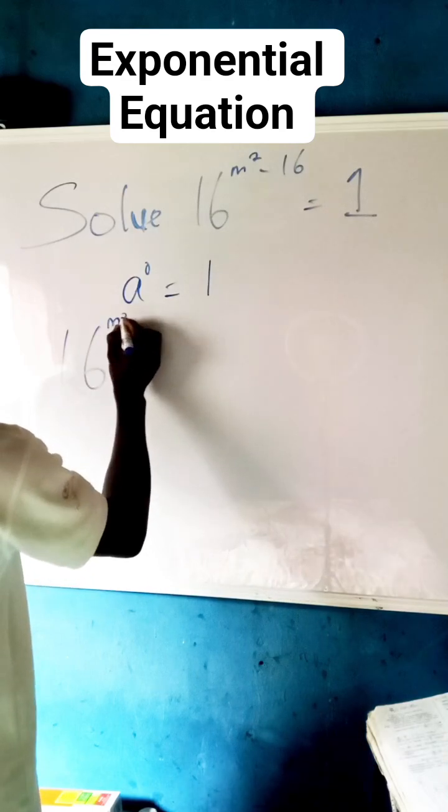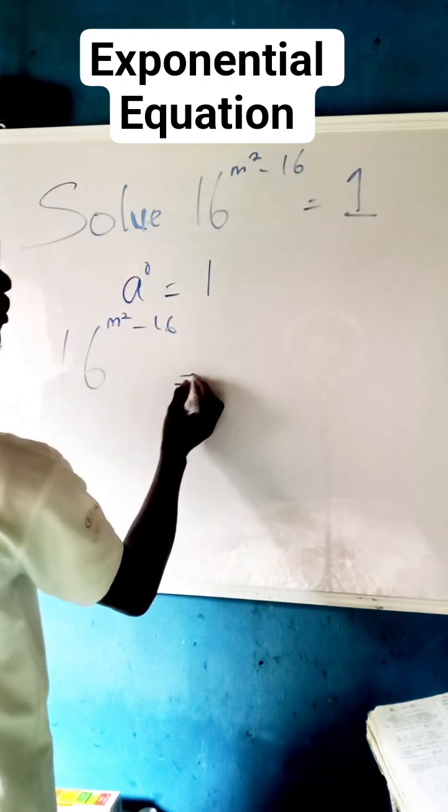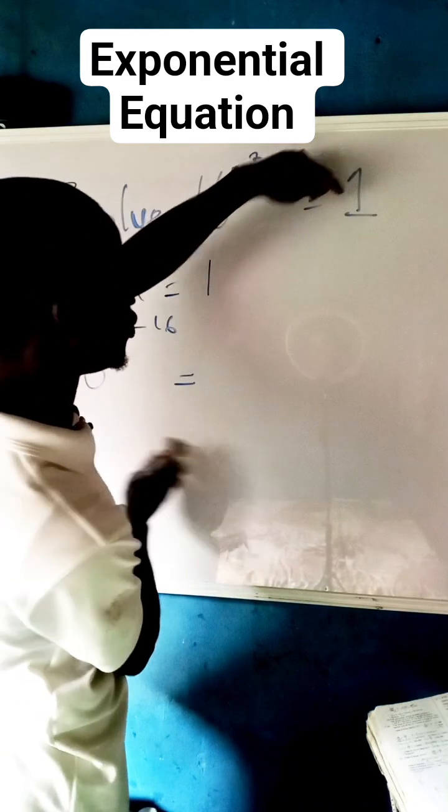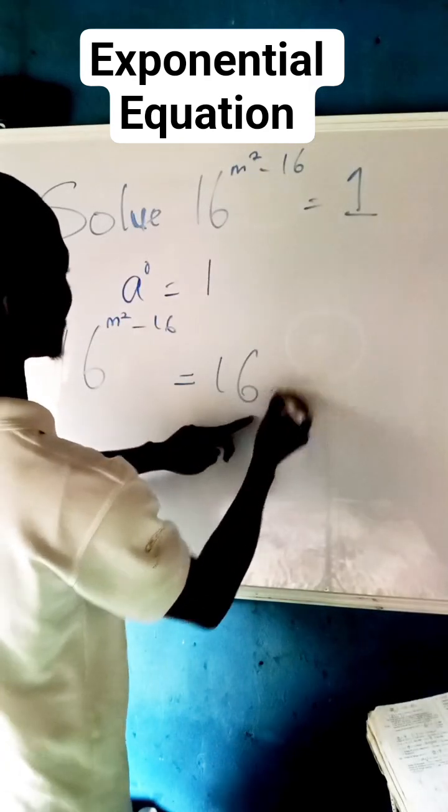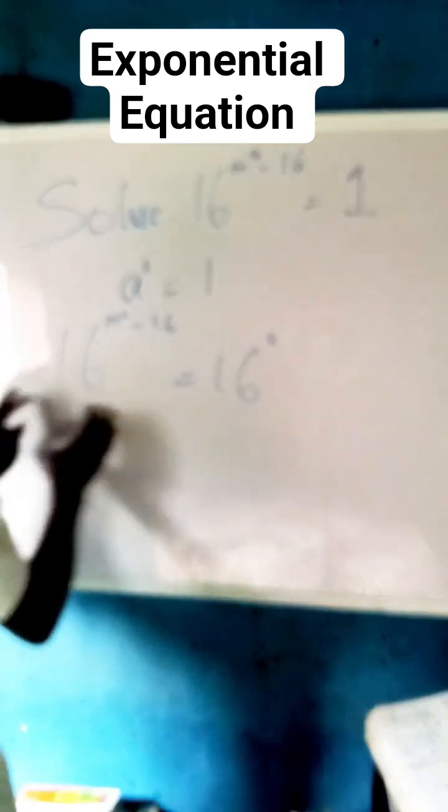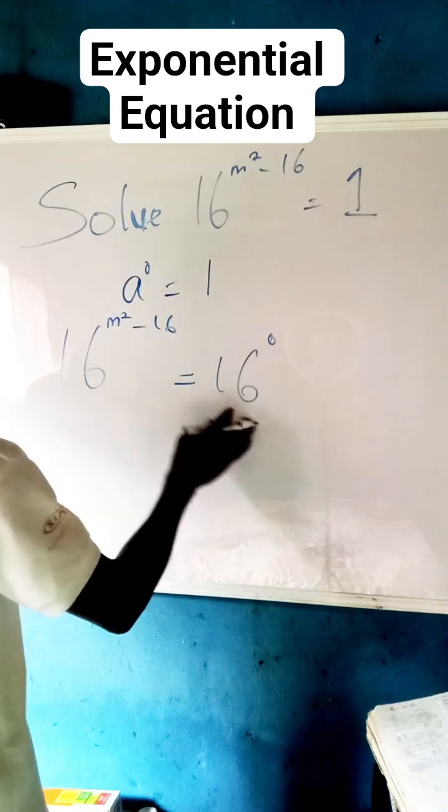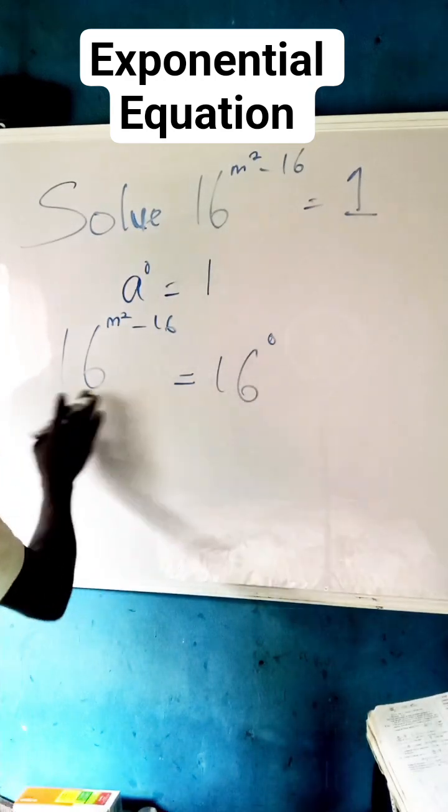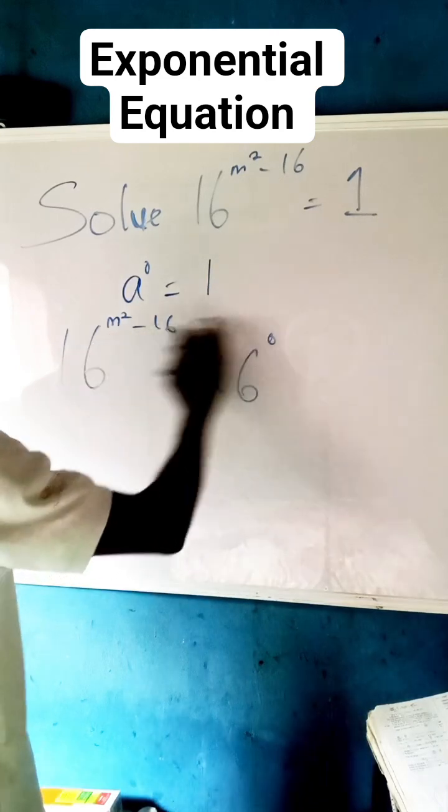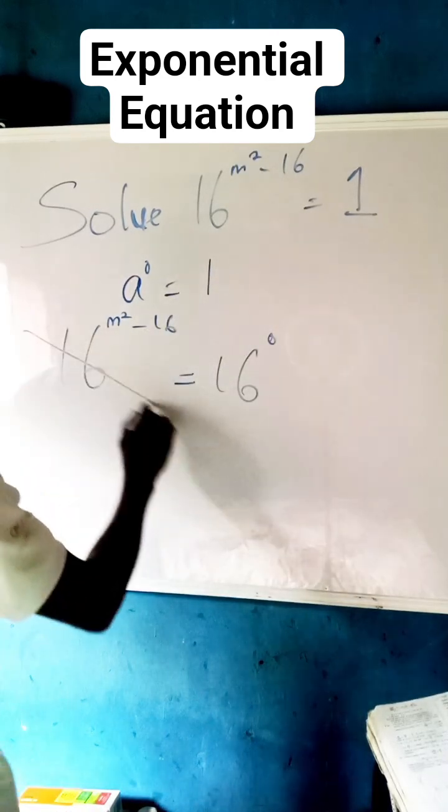This becomes m squared minus 16. Rather than writing 1, we write 16 raised to the power of zero so that we can have the same base. And because of that, the law of indices applies. We see that if the bases are equal, we can equate the powers. Now you can strike this out so that we are left with m squared minus 16 equals zero.